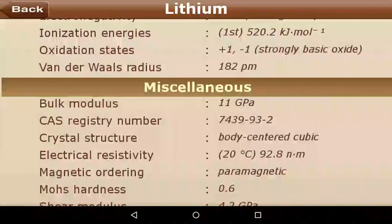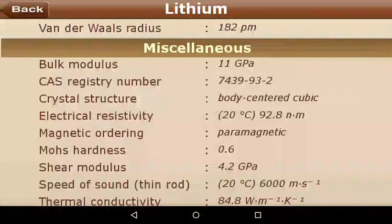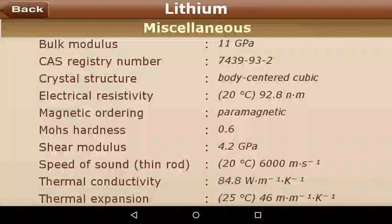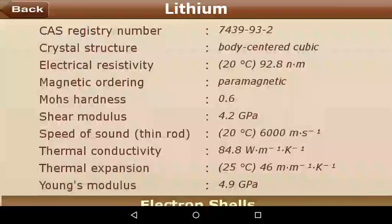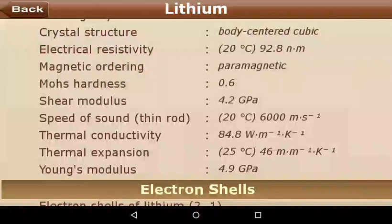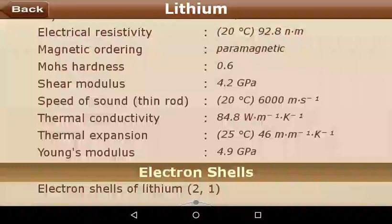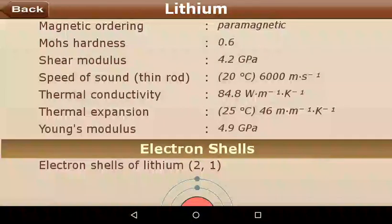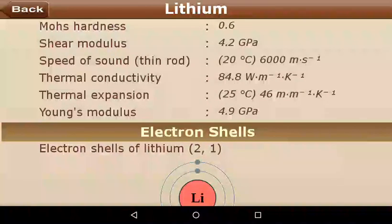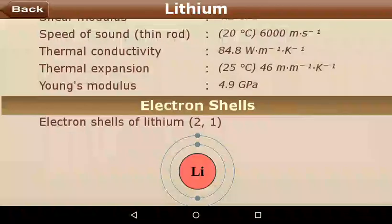Some miscellaneous properties: the bulk modulus is 11 GPa. The CAS registry number is 7439-93-2. Crystal structure is body-centered cubic. Electrical resistivity at 20°C. Magnetic ordering is paramagnetic. Mohs hardness is 0.6. Speed of sound is 6,000 m/s. Thermal conductivity is 84.8 W/(m·K). Young's modulus is 4.9 GPa.